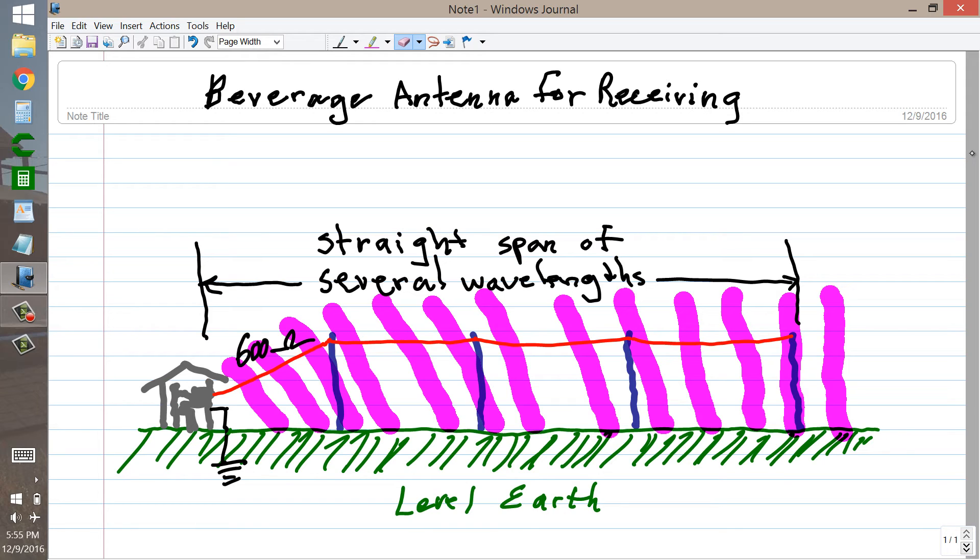but they're mainly far away. You want to receive signals, say, from Europe on 160 meters. You point this antenna generally towards the northeast in most of the United States. If you have a dissipating resistor here, you'll hear signals from Europe much better than you'll hear them from any other direction.